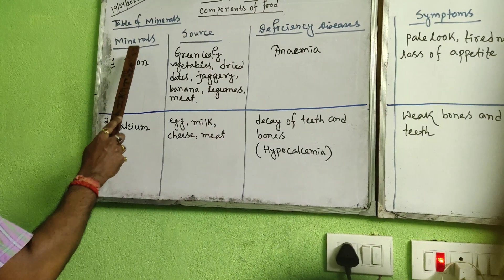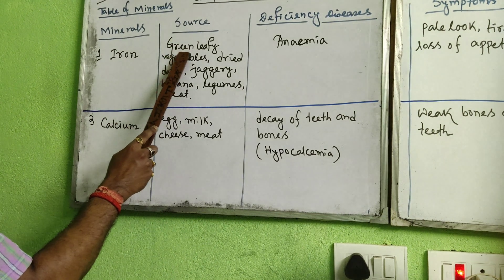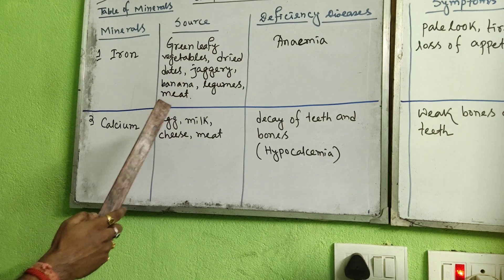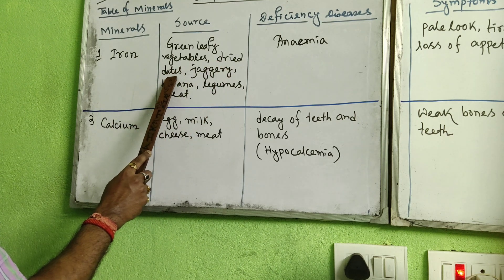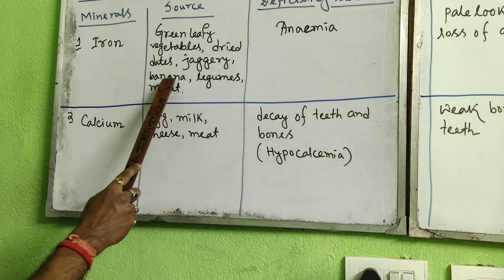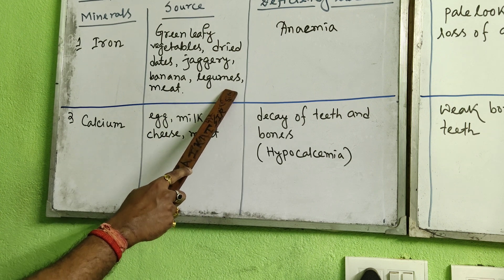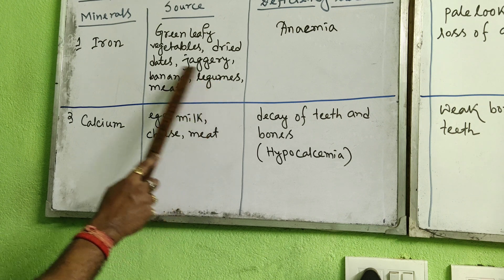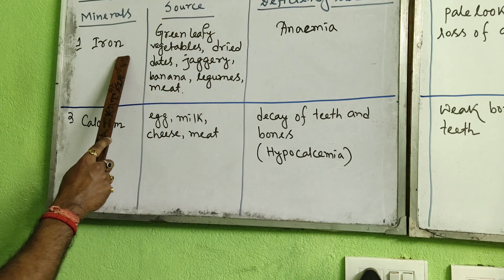The first mineral we will learn about is iron. The sources of iron are green leafy vegetables — maximum green leafy vegetables that we eat every day. From there you will get iron. Also dry dates, called Khejur in Bengali, Jaggery, Gur, banana, legumes, and meat. Legumes means leguminous plants; the pea is a kind of leguminous plant. These are the main sources from where you can get the mineral iron.